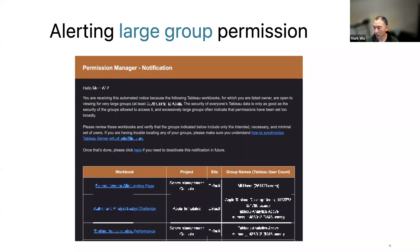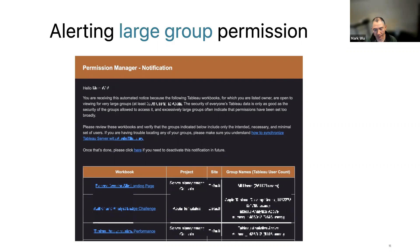Answering a question: if you set permissions at the group level with maximum site-level permissions, once AD sync happens the user is added again with site-level permission. Once AD sync happens and a group that had only 500 people grows to 1,200, they will receive this email alert. Regarding Hope's question: we have a workbook published to the server so publishers can look up exactly who is in a group. That way they know how large it is and who is in it — and you can also look up a single user to see all the groups they are in.